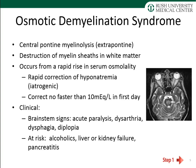This occurs from a rapid rise of serum osmolality due to rapidly corrected hyponatremia. When you correct hyponatremia quickly, you cause this irreversible demyelination syndrome. We should not correct hyponatremia any faster than 10 milliequivalents per liter in the first 24 hours. Clinical signs are brainstem signs: acute paralysis, dysarthria, dysphagia, and diplopia — a combination of corticospinal findings and cranial nerve abnormalities.